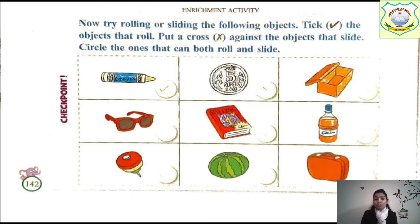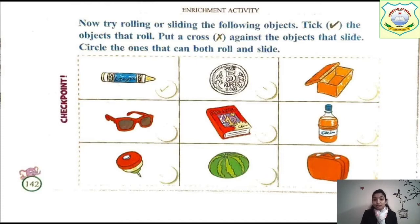Now try rolling or sliding the following objects. Pick the objects that roll and put a tick. Put a cross against the objects that slide. Circle the ones that can both roll and slide. So tick for roll, cross for slide, and circle for objects that do both.